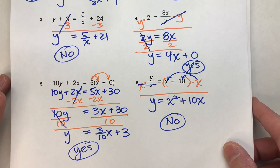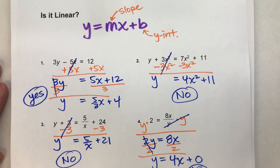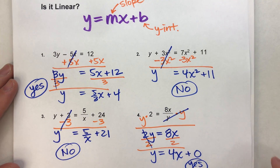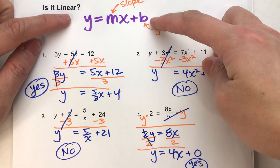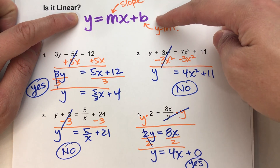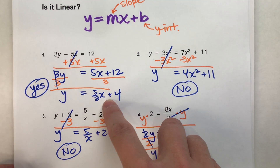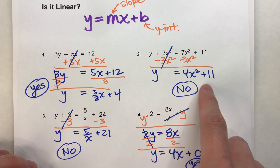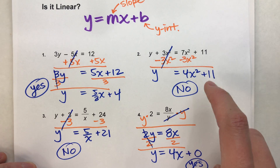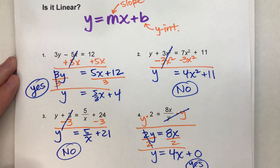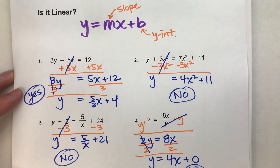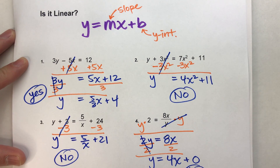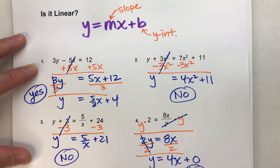The key to determining if an equation is linear is using algebra to rewrite it and see if you can get it into slope-intercept form. If you can, it's linear. If you get y by itself and it cannot be put into slope-intercept form, it is not linear. Hopefully you found this video helpful — please hit the like button and subscribe, and good luck with your math!